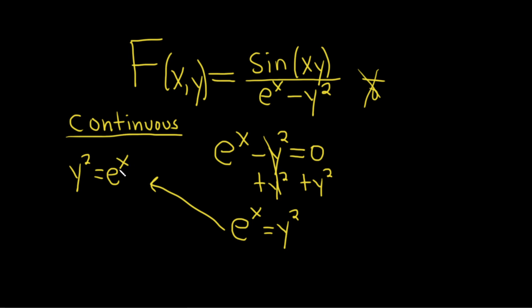So if we have this condition for an ordered pair x comma y, the function will not be continuous. If we take the square root of both sides we do get a plus or minus. So y equals plus or minus the square root of e to the x. So this function will be continuous everywhere except where this condition applies.